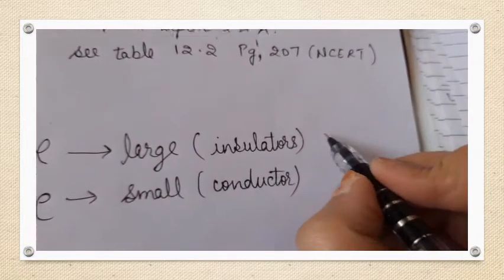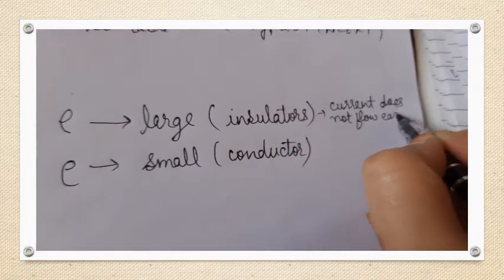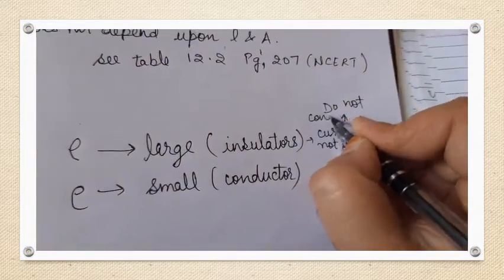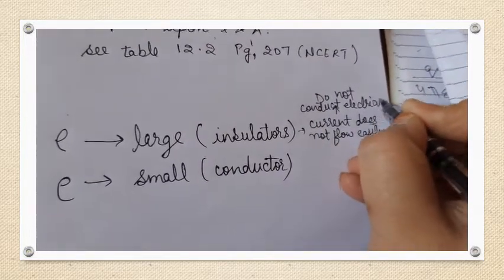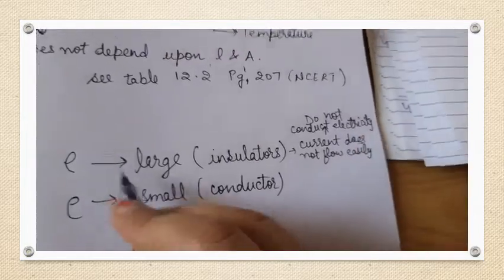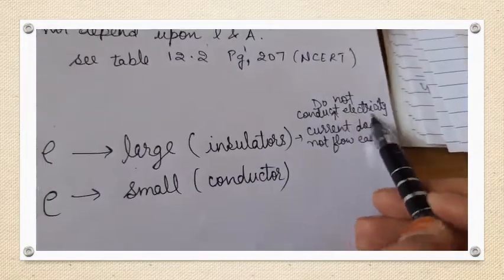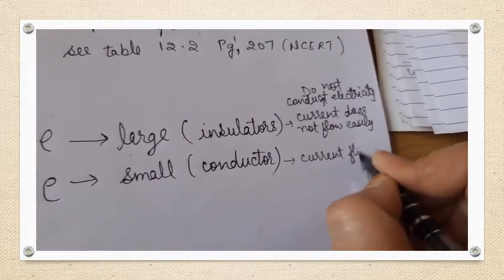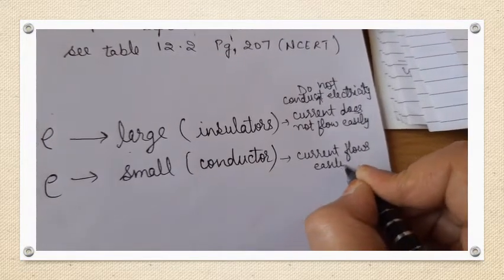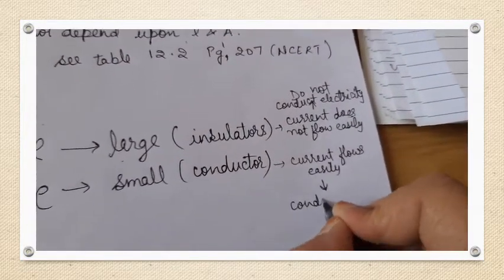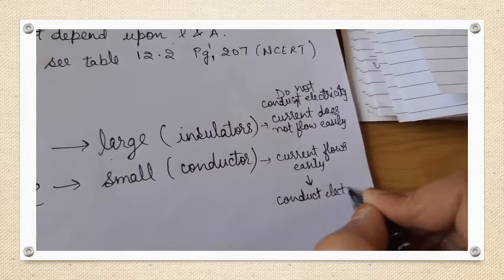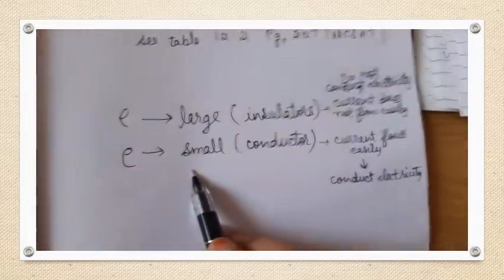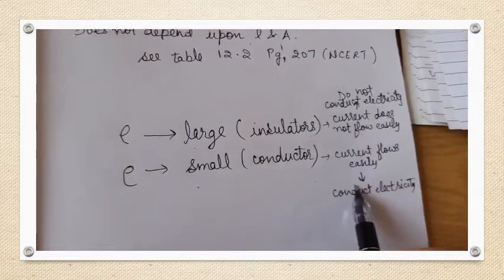Insulators do not conduct electricity. Greater the value of resistivity, lesser is the conductivity. For conductors, current flows very easily and they conduct electricity very well. So the value of ρ determines whether a material is an insulator or a conductor.